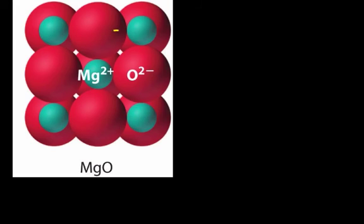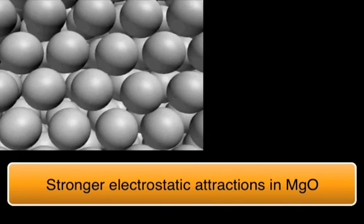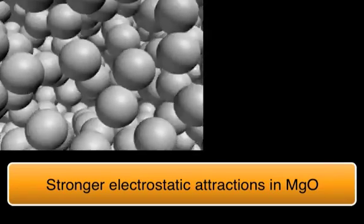Well the reason is, you've got a 2 plus ion and a 2 minus ion, the magnesium and the oxygen, have a higher electrostatic force between them, because of a higher charge, and so therefore that's what we have to overcome, to melt the lattice, to melt the compound, and therefore it has a higher melting point.